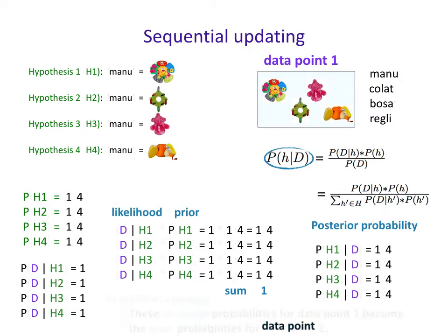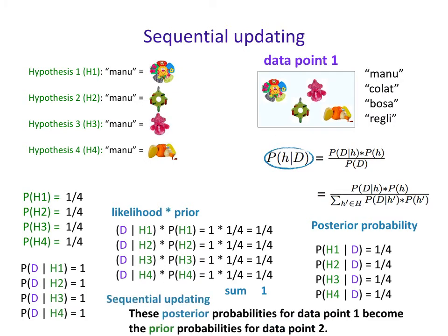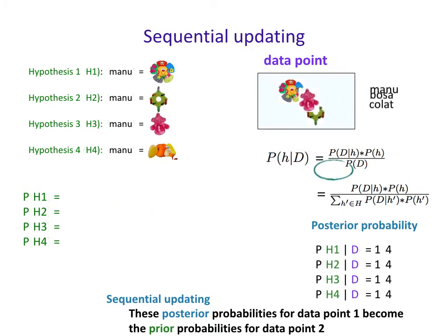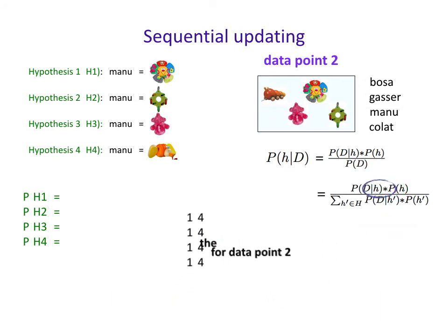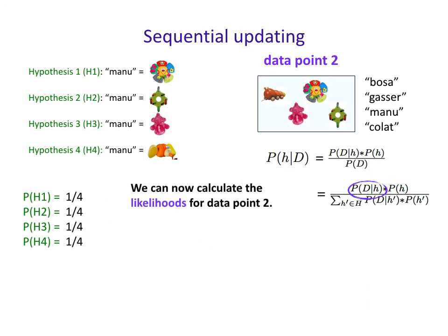Now here's the sequential updating part: the posterior probabilities for data point one become the prior probabilities for data point two. Whatever we got here now moves over to become the prior for the next step.